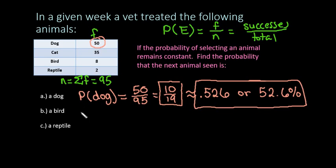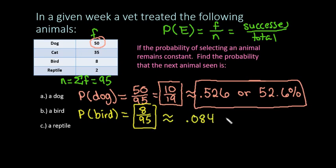So let's look at the next one. For the next one we're looking for the probability that a bird was selected. So with this we would take 8 out of 95 and I can't actually reduce that, so I would just leave it as 8 over 95. Or if you wanted to write this as a decimal approximation you would do 8 divided by 95 and you get 0.084 or 8.4%.